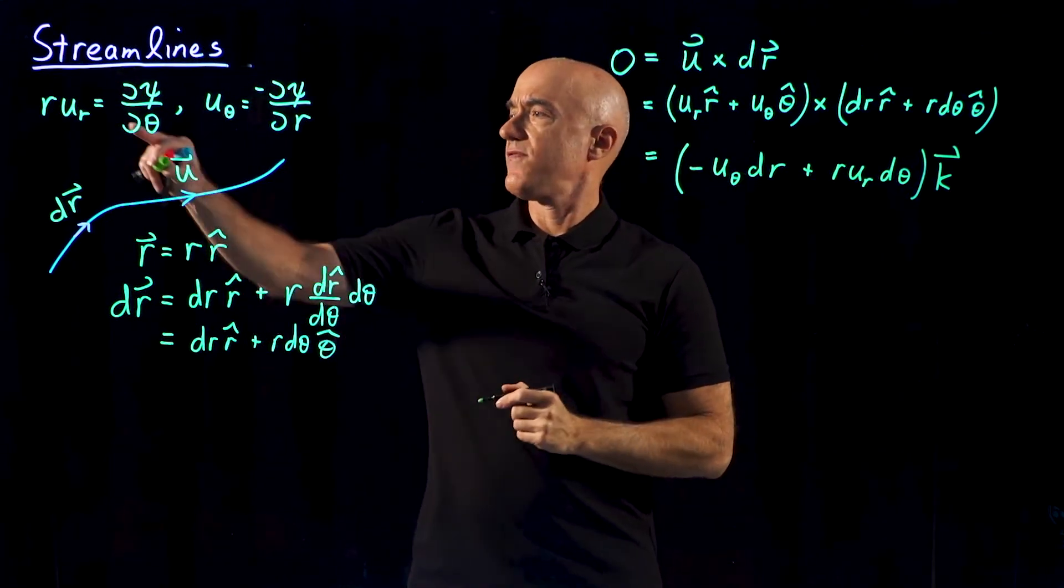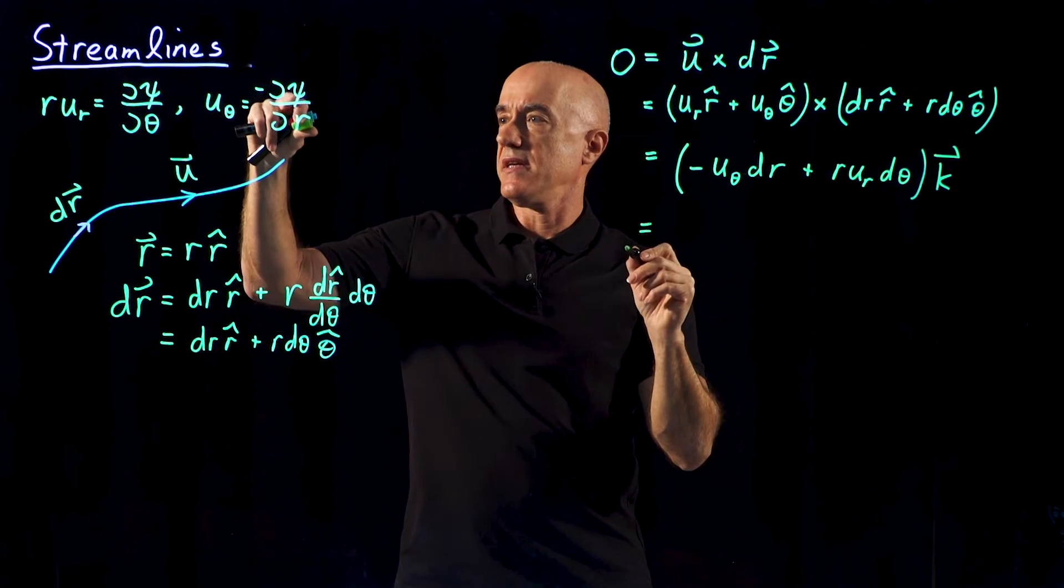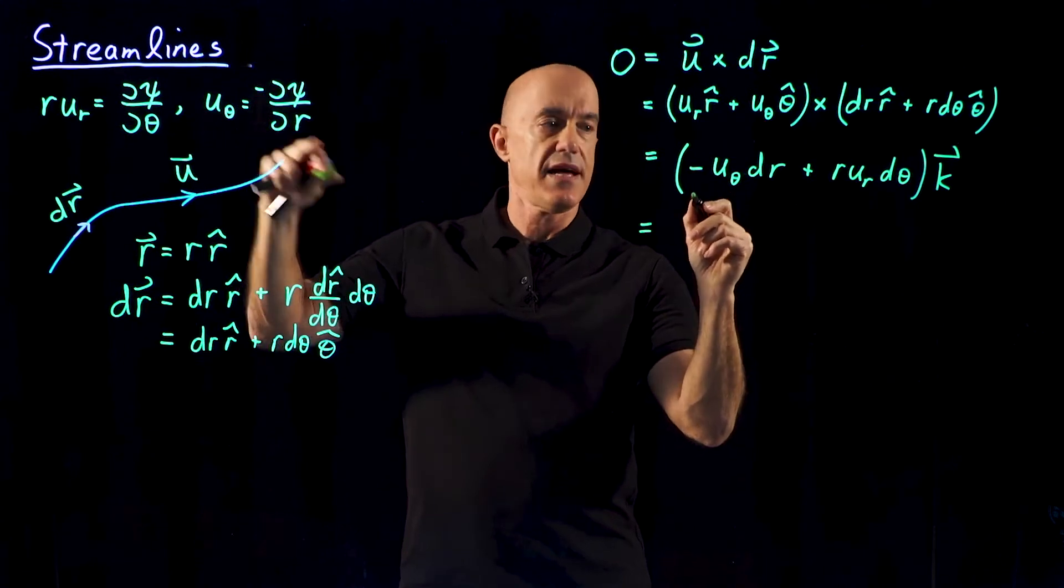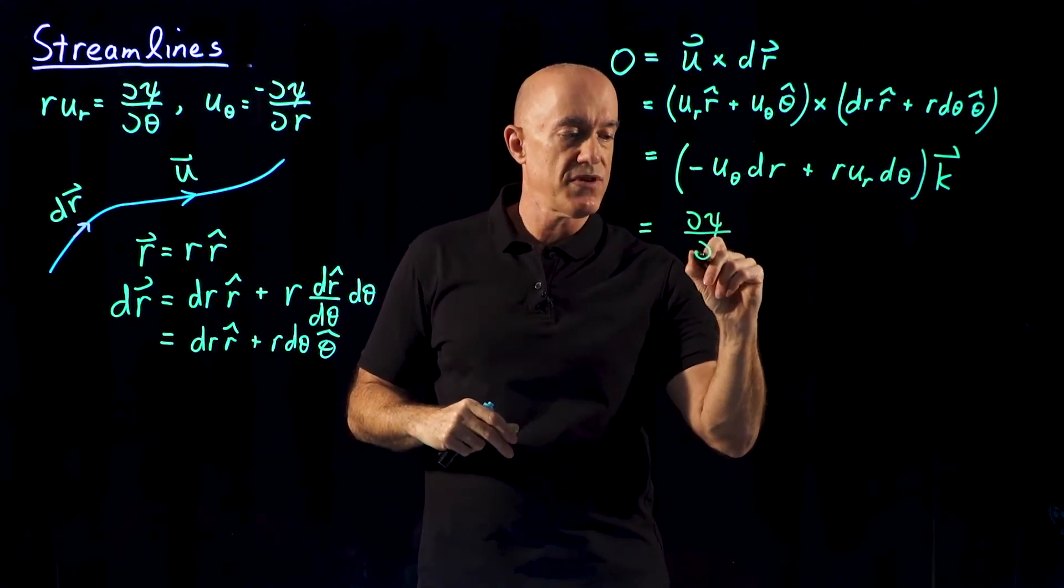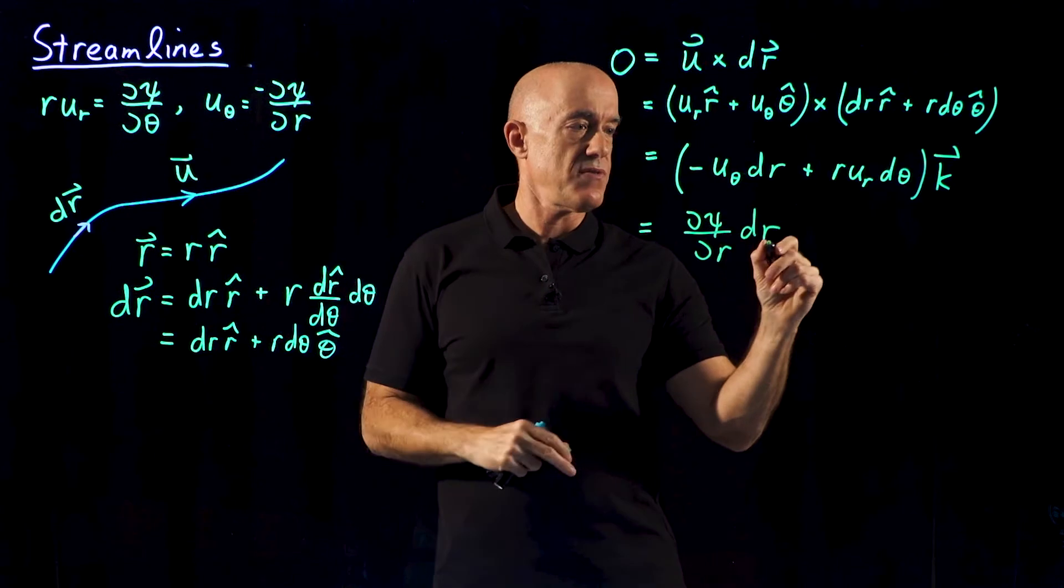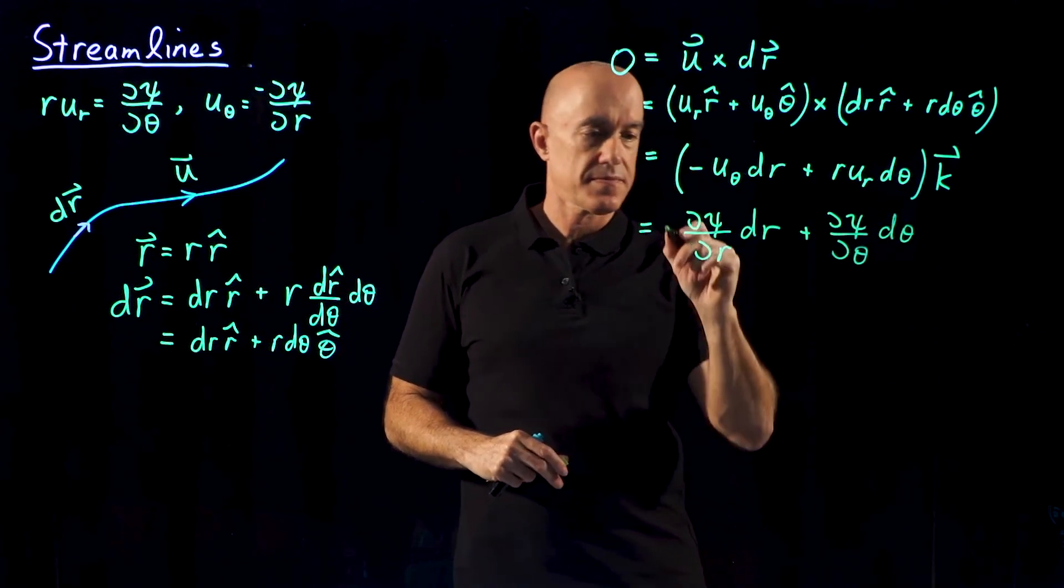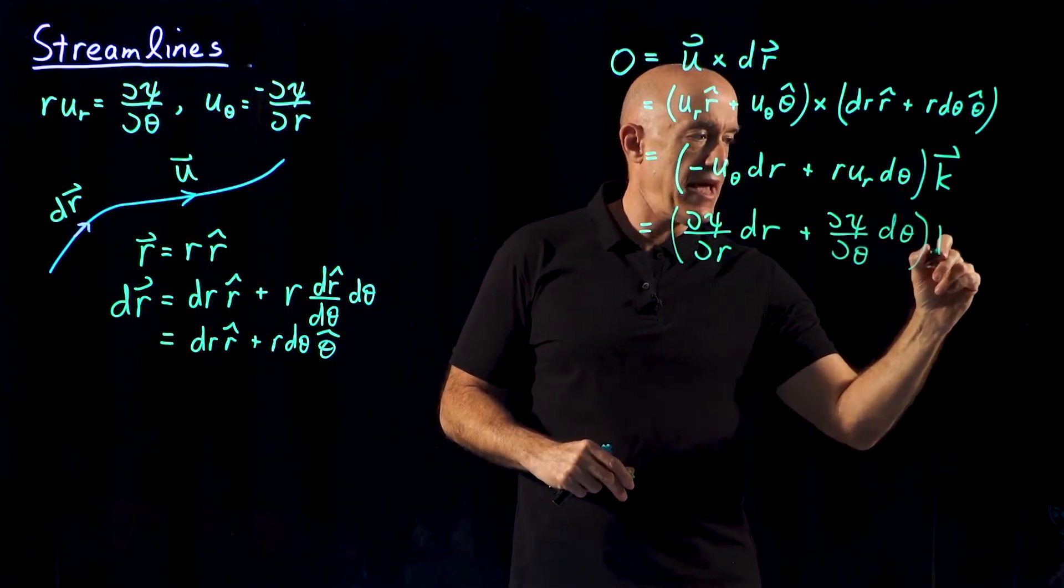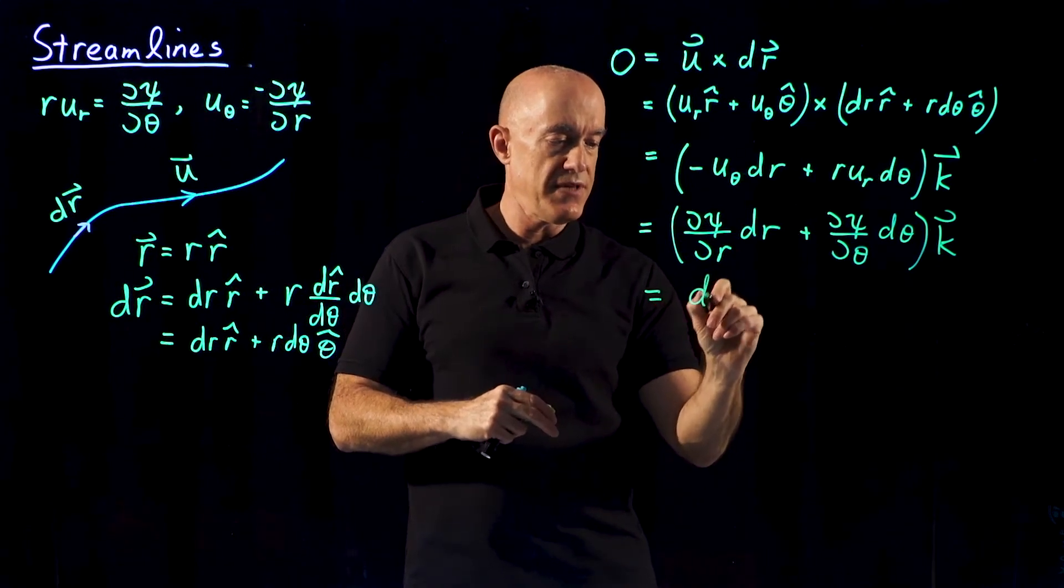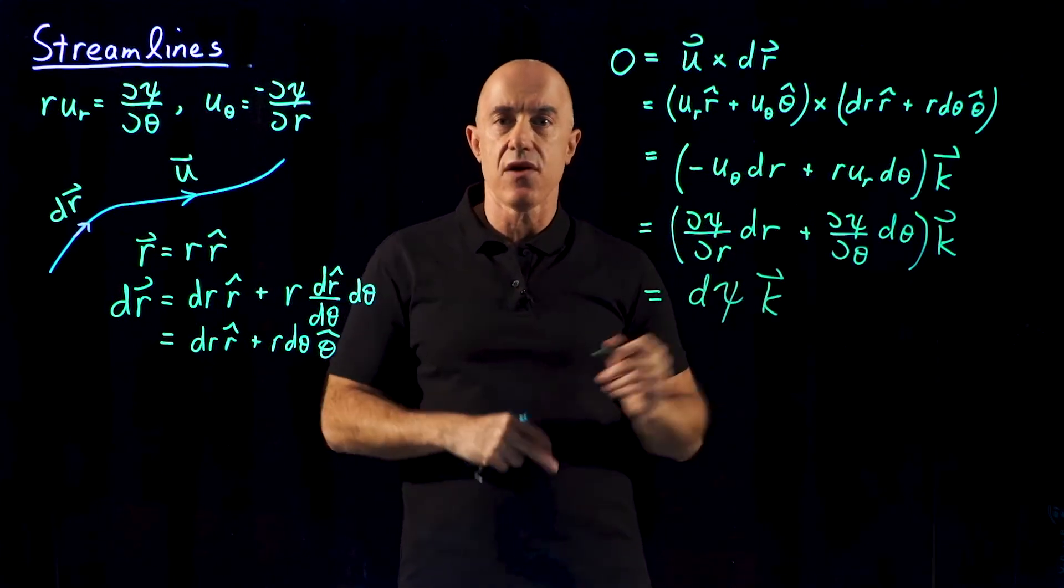This is supposed to be 0. But what is this inside? If we go back to our definition of the stream function, u_theta is just negative d psi dr, partial of the stream function with respect to r. The minus signs cancel, so that becomes partial of psi with respect to r dr. And r u_r is partial of psi with respect to theta, so that becomes partial of psi with respect to theta d theta. And that's a vector in the k direction. What is this? Well, this is just the definition of d psi in the k direction. So this is our infinitesimal d psi.